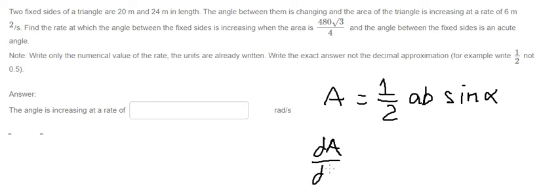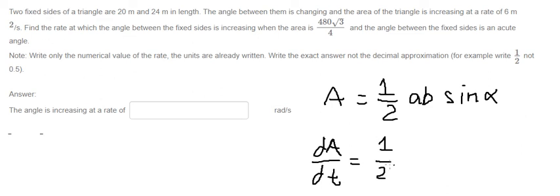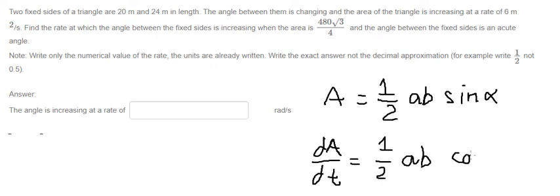We get dA/dt equals one-half times ab — since a and b are fixed sides they don't change — so we differentiate sine alpha, which gives cosine alpha times dα/dt.